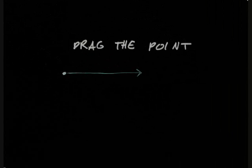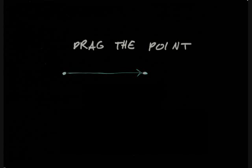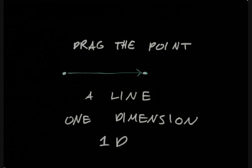But if we drag a point away from its position to another one, the path that we dragged it along will be a line. A line has length, but it does not have width or height. It is one dimensional, and it has one direction: back and forth.